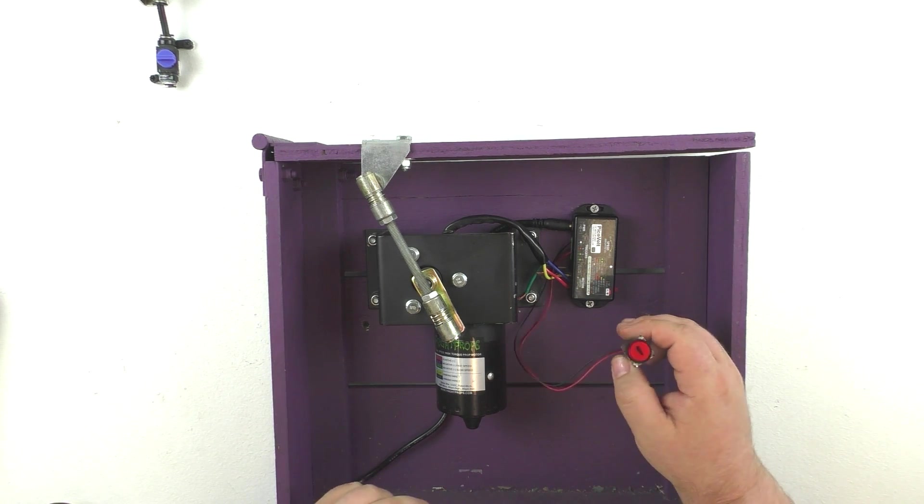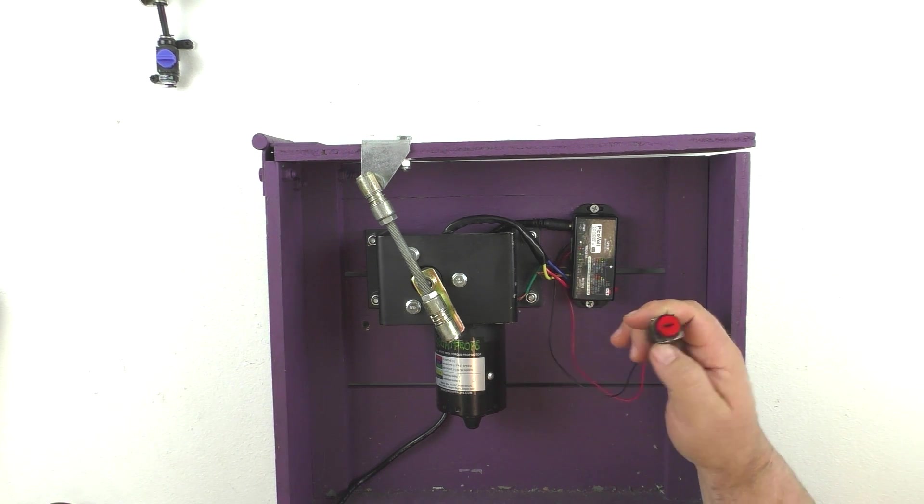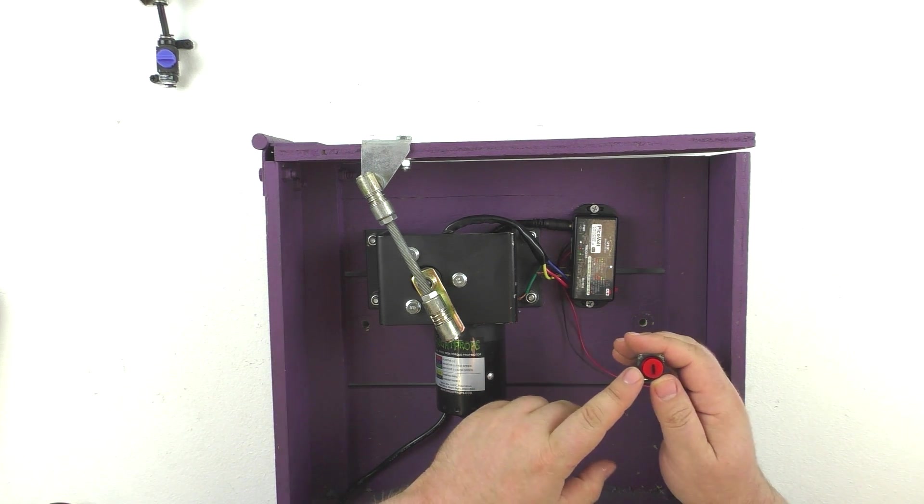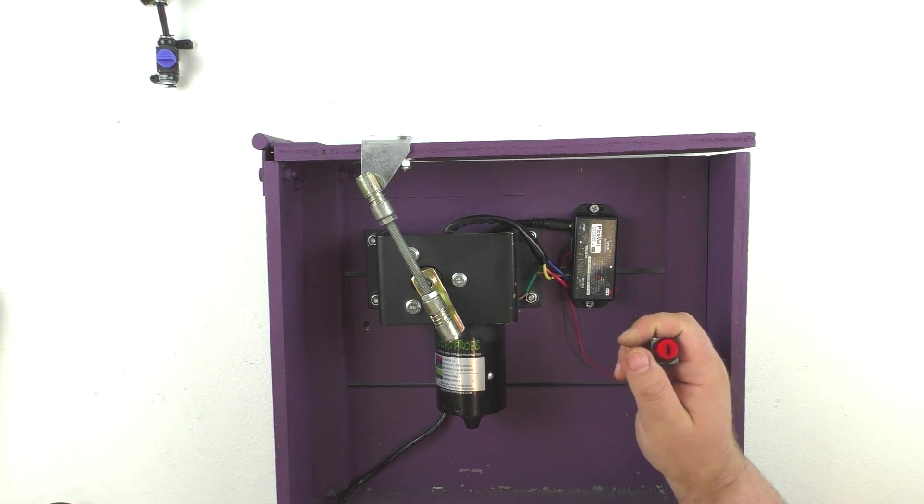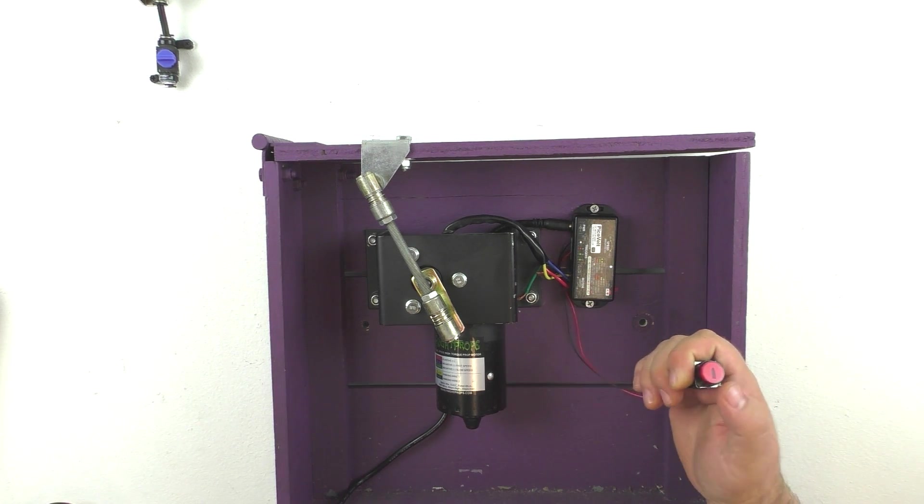You can attach almost any type of trigger to the trigger inputs of the PikaVolt. Here I have a push button as a demonstration. I've wired this into the number one input of the PikaVolt which is where we just recorded our show. So I can go ahead and press this button and it'll play back our show.